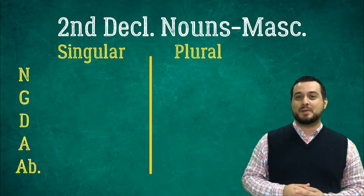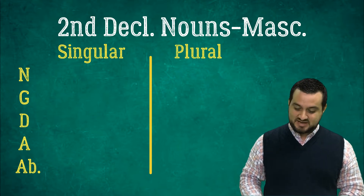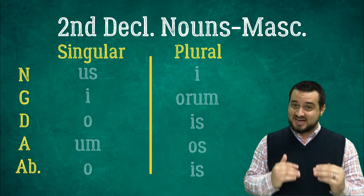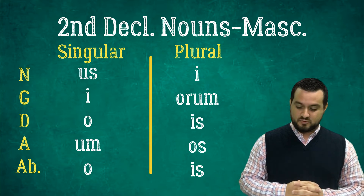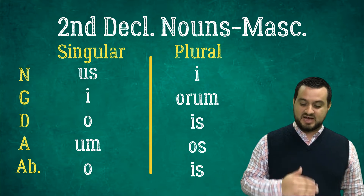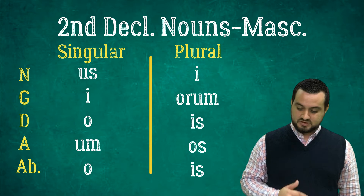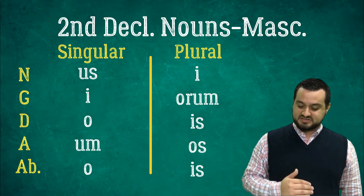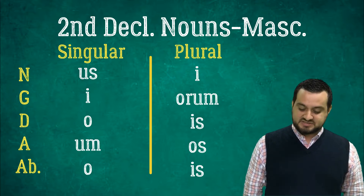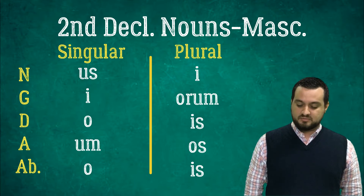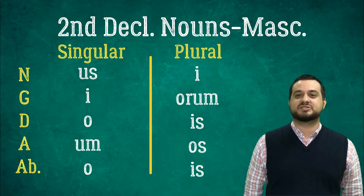Let's move on to second declension masculine. We're going to set it up the same way. These are the ones with the Us's, the I's, and the O's. Starting with nominative singular, the ending starts as Us, I, O, Um, O. I, Arum, Is, Os, Is. Let's do it one more time: Us, I, O, Um, O. I, Arum, Is, Os, Is.